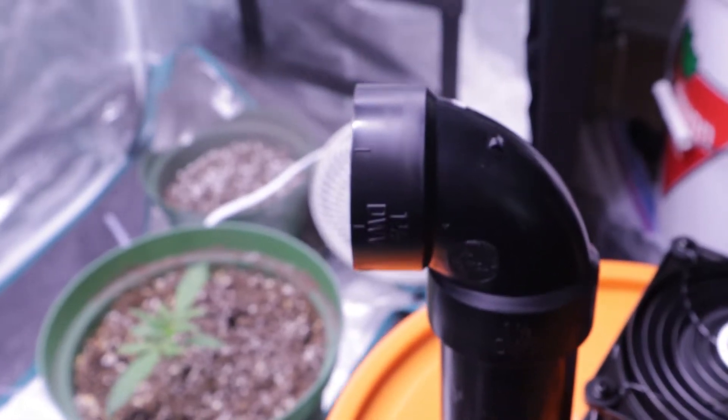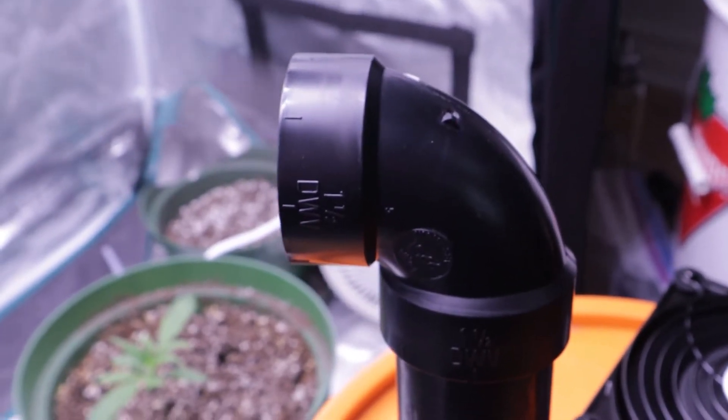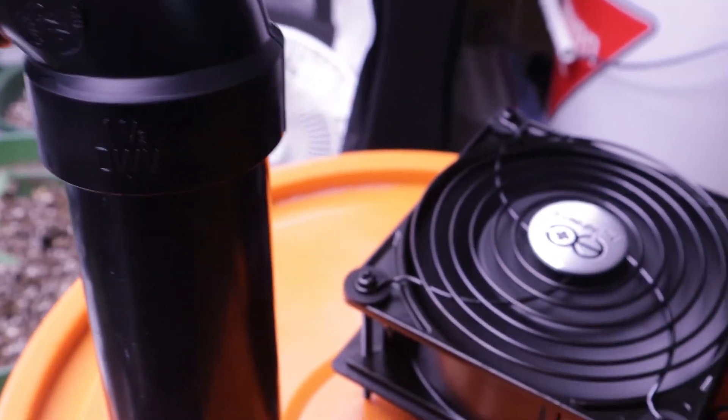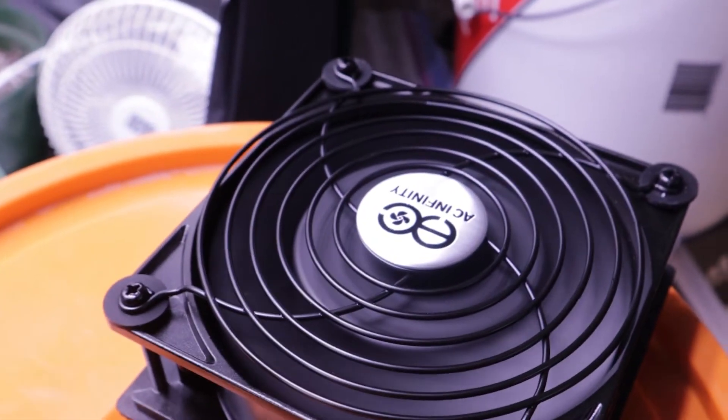So what we're building here today is a DIY system that's going to run with an AC Infinity fan and ultrasonic mister, and we'll be able to control it through either an Inkbird controller with humidity or similar, or a Raspberry Pi with another outlet connector.